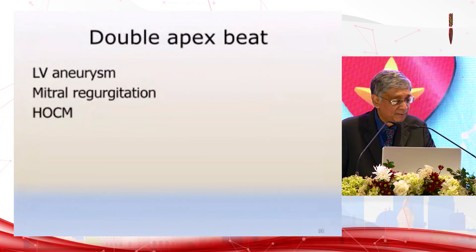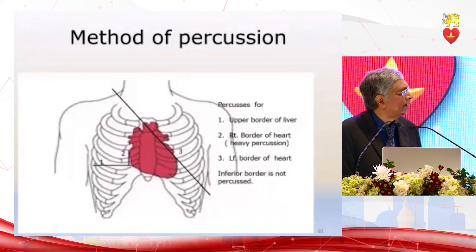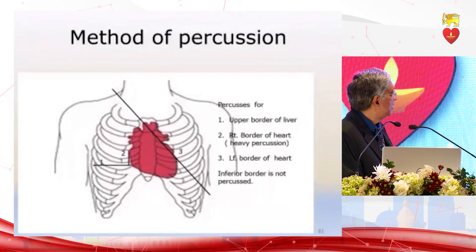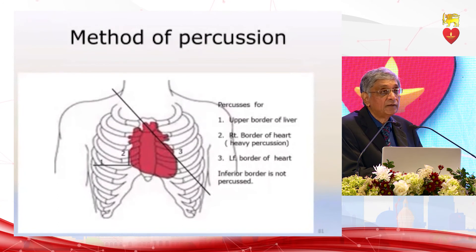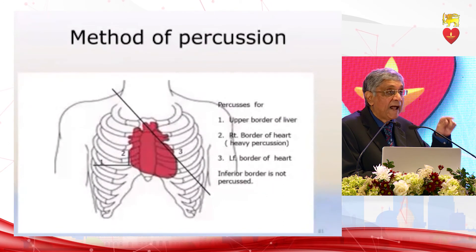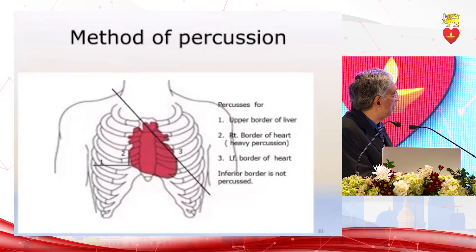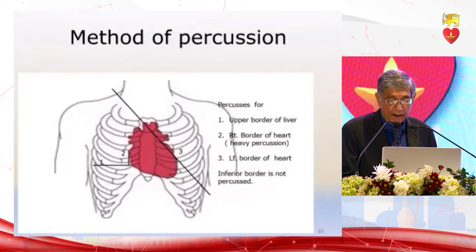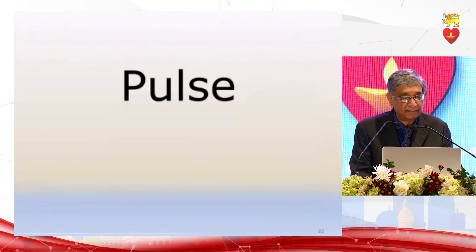Sometimes you feel a double apex beat — seen in left ventricular aneurysm, mitral regurgitation, and HOCM. Nowadays we do not often percuss the heart, but when you do: first percuss the upper margin of the liver, then the left border, then the right border using heavy percussion — because otherwise a sleeve of pulmonary tissue will give a false reading, and light percussion will pick that up rather than the cardiac dullness. The oblique border is taken; the inferior border is inferred by joining the upper border of the liver with the apex beat.